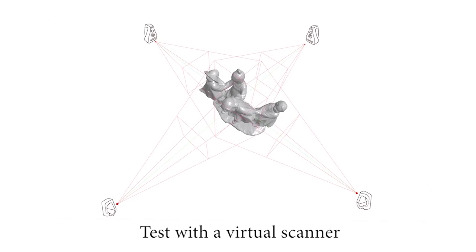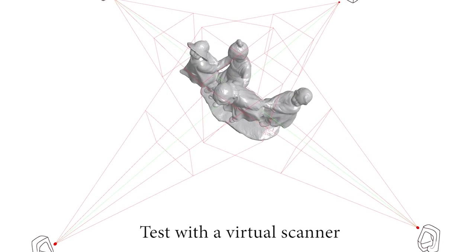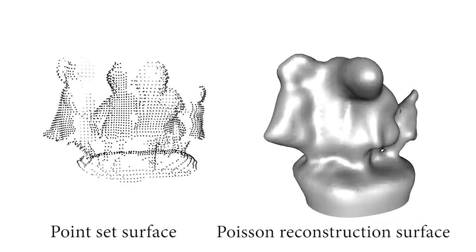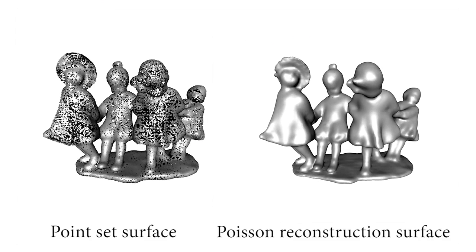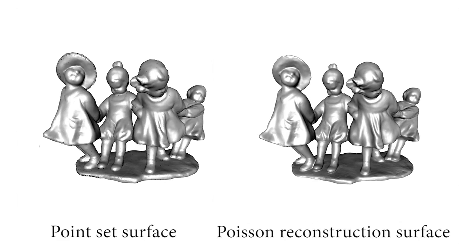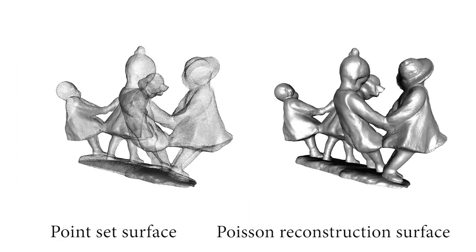We have also tested and evaluated our algorithm using a virtual scanner on a digital model with unknown shape. Its geometry is rapidly recovered and the details are progressively refined as more and more virtual scans are performed autonomously. The final model captures all features without any topological errors.